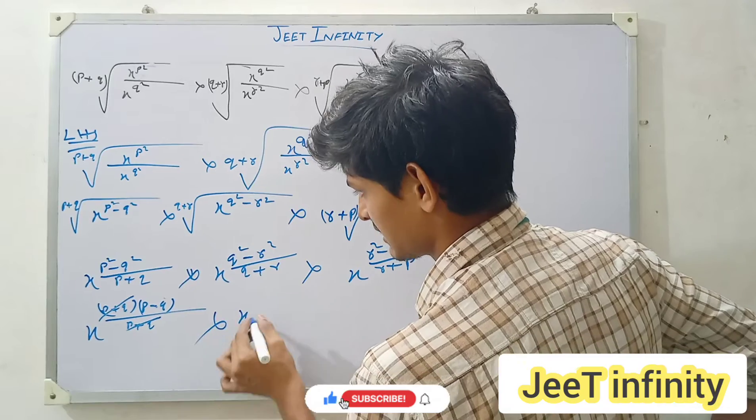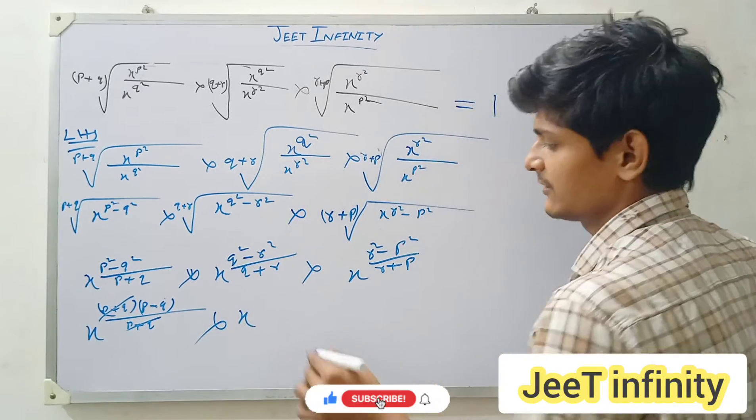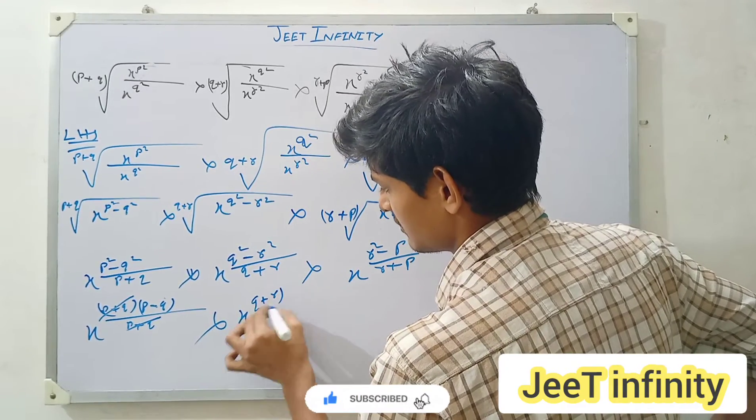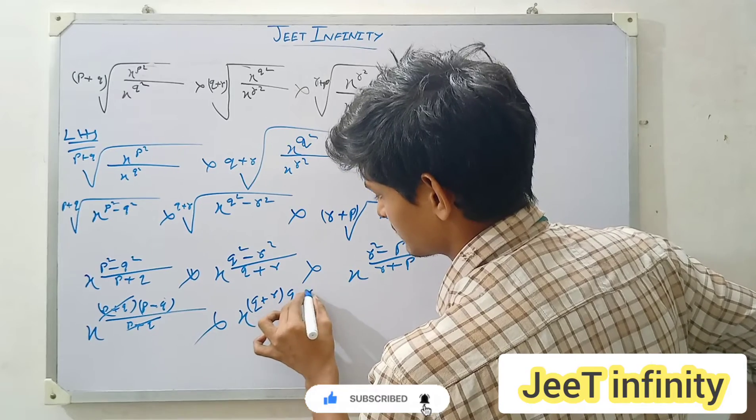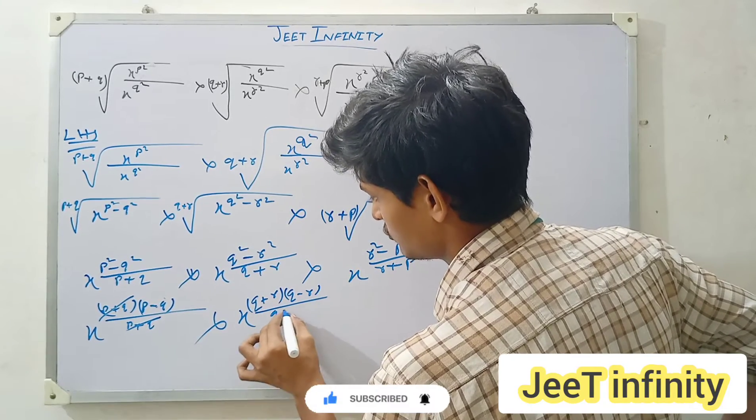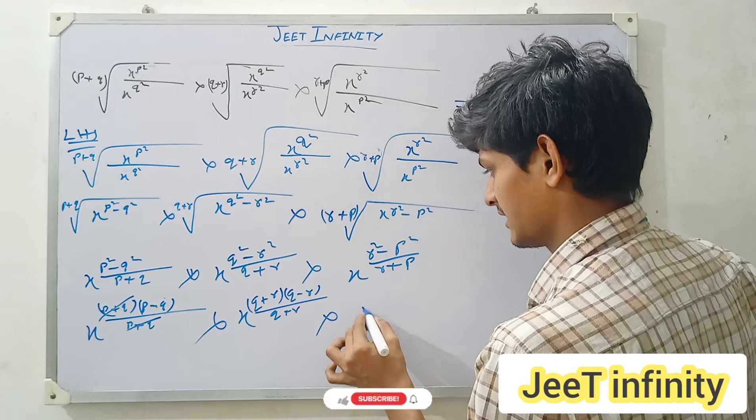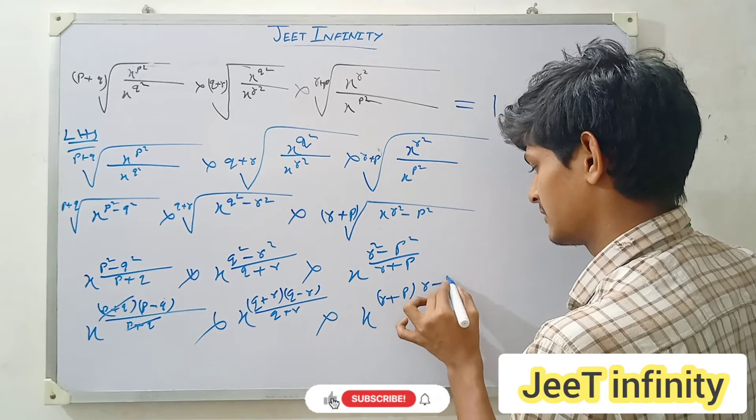Again you will write here x to the power (q plus r) and again (q minus r) over (q plus r), multiplied by x to the power (r plus p) and (r minus p) over (r plus p).